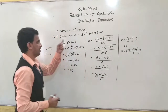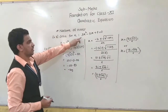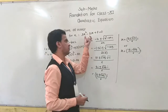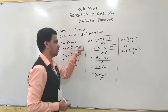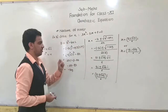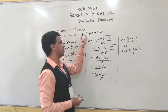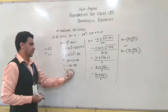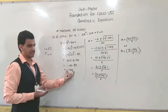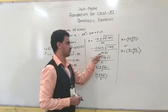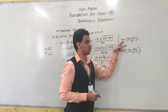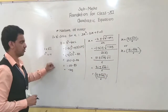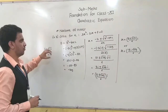These roots are not in the form a + ib and a − ib, so they are not complex conjugates. When coefficients are not real (imaginary coefficients), and real roots do not exist, we get roots which are not complex conjugates.